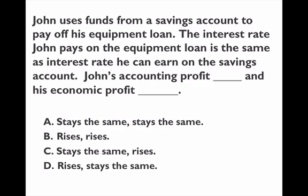The question reads: John uses funds from a savings account to pay off his equipment loan. The interest rate John pays on the equipment loan is the same as the interest rate he can earn on the savings account. The question asks what John's accounting profit and economic profit are. To make this more understandable, I'll use a numerical example.